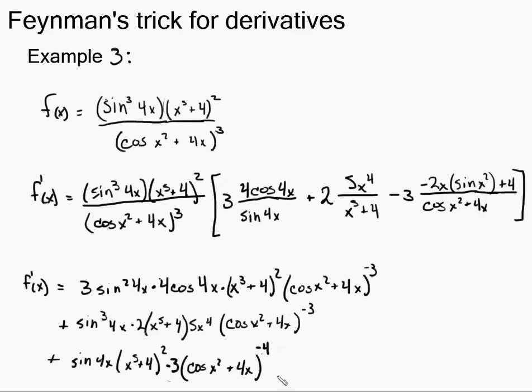And then the derivative of the inside of this. I have to do 2x because that's the derivative of the inside. The derivative of the cosine is negative sine. Sine. And then I still have the x squared and then I also have plus 4.